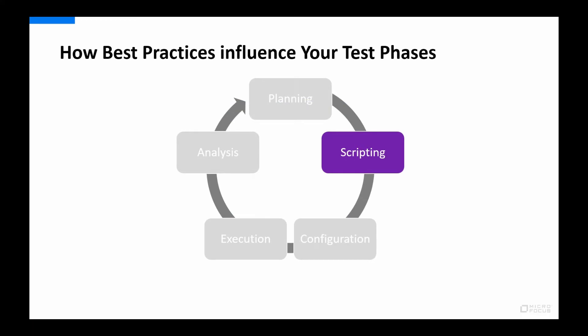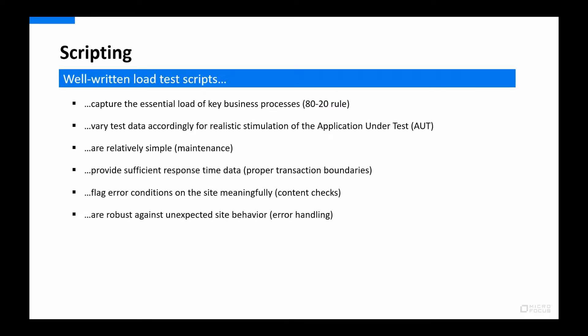Let's look at some scripting best practices. Scripts should capture essential but not all business processes, since usually 80% of the load comes from 20% of real-world business flows — we don't need to test every nook and cranny. Scripts should have variation in test parameter data to create a realistic load simulation, and should be kept as simple as possible while still doing the job so they are easy to maintain. They should use proper transactions so that response times are measured correctly, and include proper content checks so we know the scripts are doing what we expect.